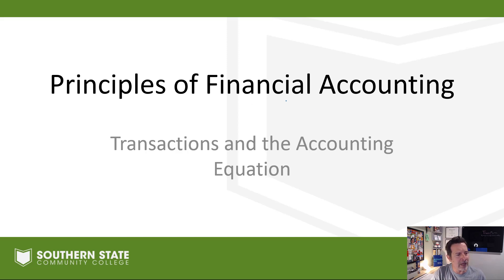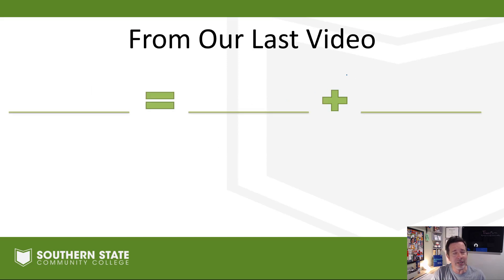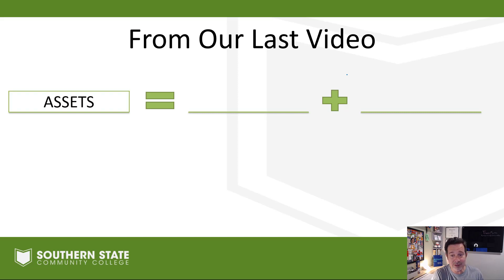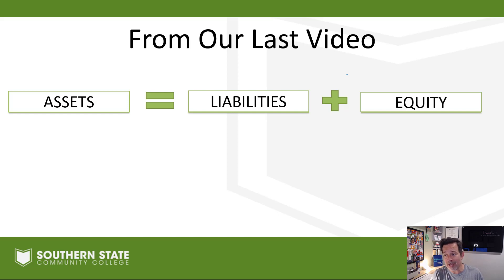If you've been following along, you already know we have an accounting equation — a very important concept in accounting. We actually have an entire financial statement that revolves around that accounting equation. It's called the balance sheet. And we know that our accounting equation and our balance sheet shows: assets equals liabilities plus owner's equity.